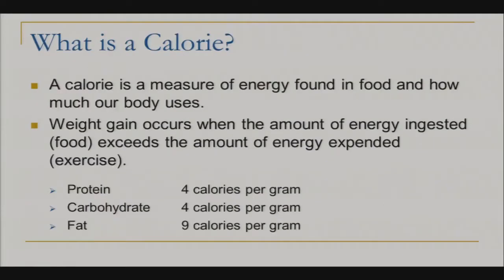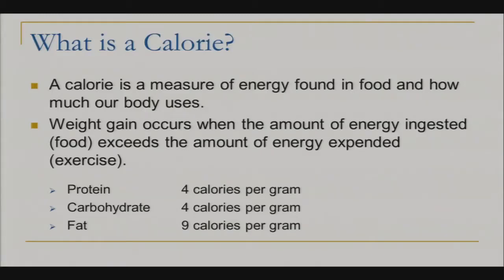But what exactly is a calorie? A calorie is a measure of energy found in food, and it's how much our body uses. Weight gain occurs when the amount of energy ingested — the food we take in — exceeds the amount of energy expended, the exercise that we put out.